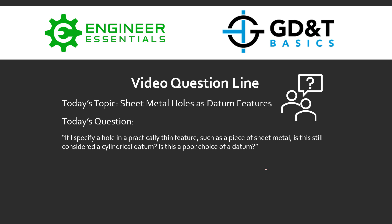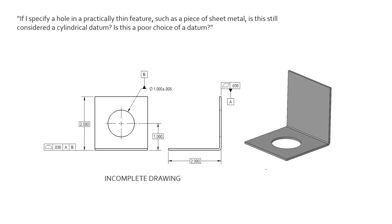Hey everybody, Jason here with GD&T Basics. Today on the video question line we're going to cover a topic based on sheet metal holes as datum features. The question from the student is: if I specify a hole in a practically thin feature such as a piece of sheet metal, is this still considered a cylindrical datum, and is this a poor choice of datums?